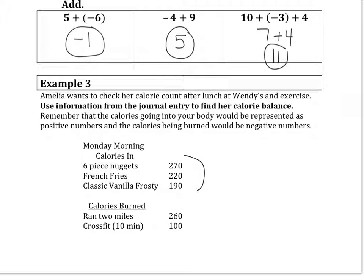The calories going into her body we're going to add up over here on the side. So 270, 220, and 190. So we're going to do some old school addition here since we don't have a calculator. 7, 2 plus 9, 8, carry the 1. Let's see, 1, 2, 3, 4, 5, 6.